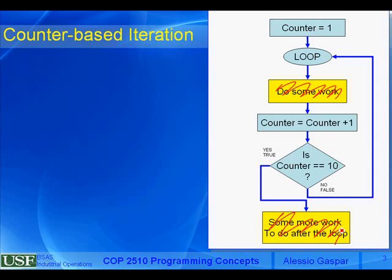What do we mean by counter-based loop? There are two kinds of loops. The loops for which you know exactly how many times you want to do something — for example, repeat 10 times, display hello on the screen. The other type: display every character in a text file until you reach the end of the file. The former is called a counter-based loop; the second is called a sentinel-based loop.